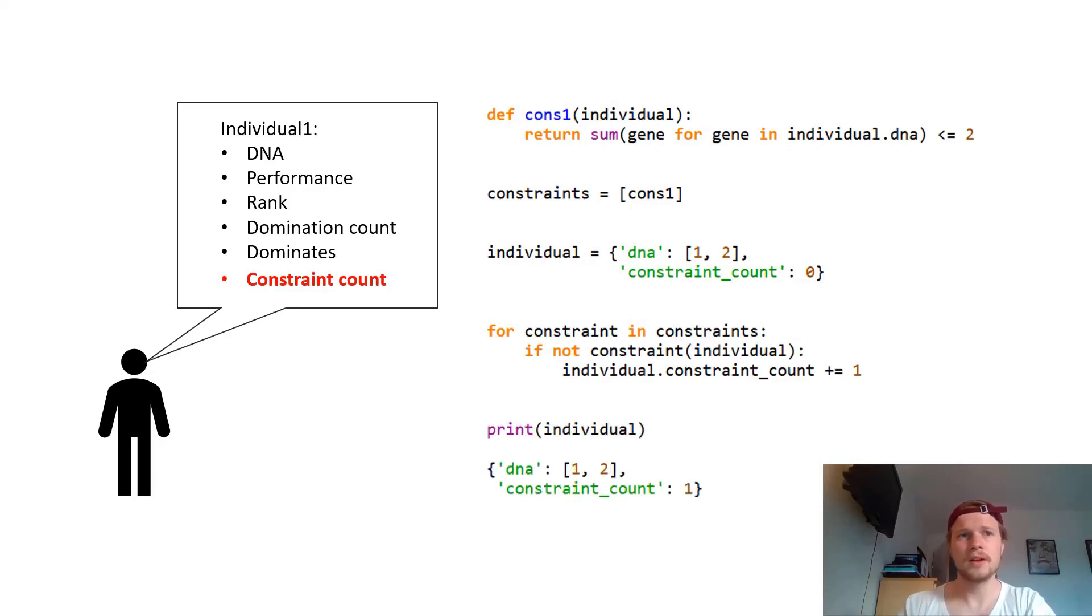So as an example here, the DNA of the individual is one and two. If I add up one and two, this equals three. If I ask my one function if three is small or equal than 2, it returns false. And therefore the constraint count is one and not zero anymore.